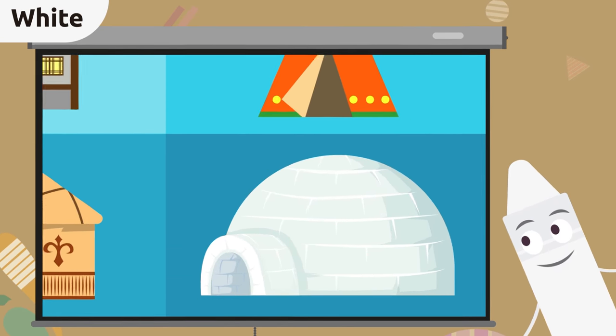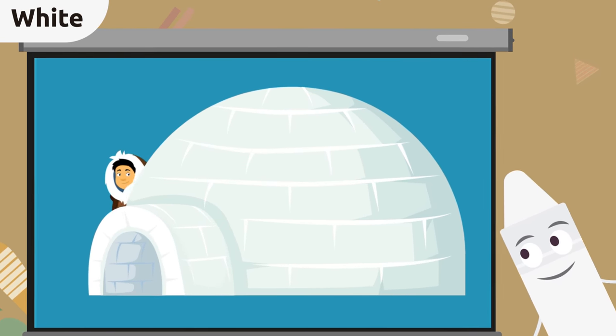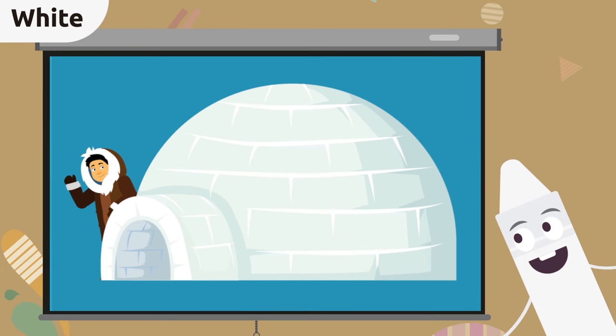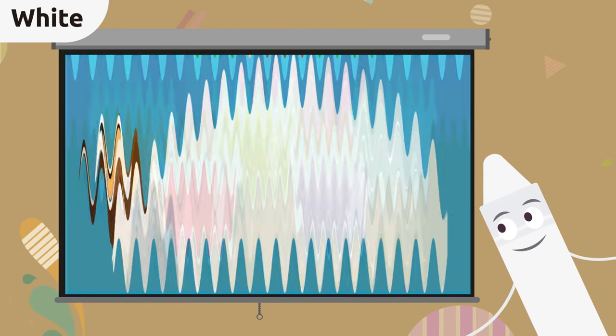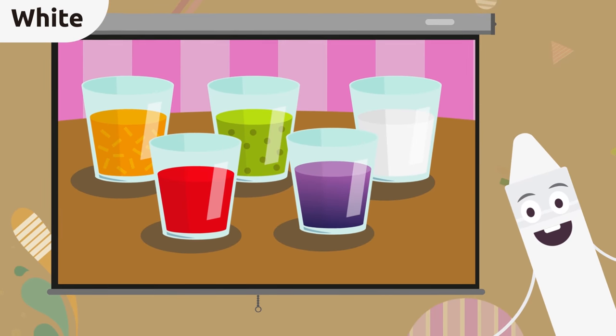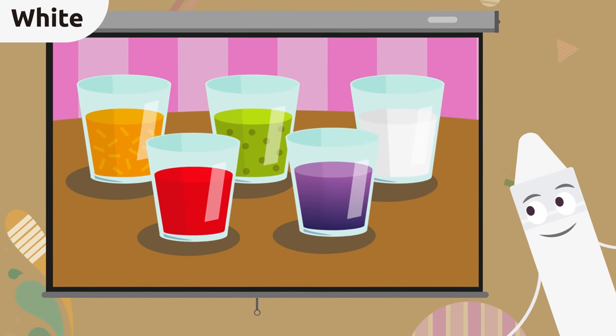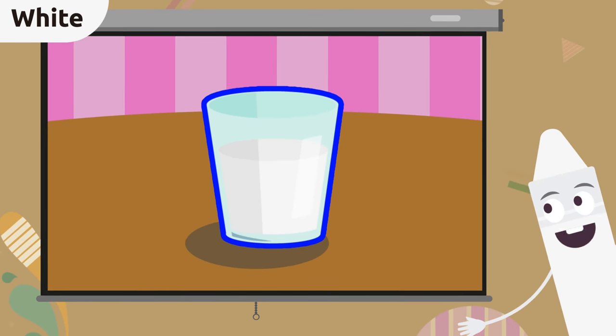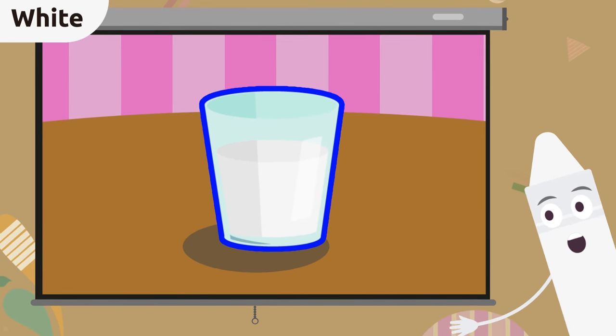The igloo, this igloo is white. That's an Eskimo. Let's sing together later. Look at all those glasses. There's one glass filled with something white. The glass of milk. Milk is white. Well done everyone.